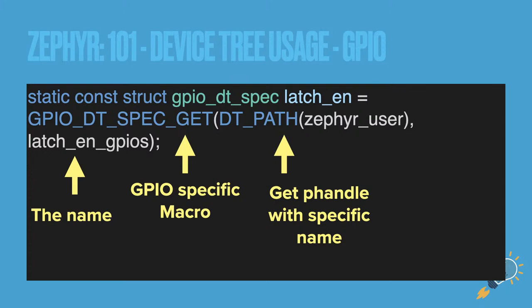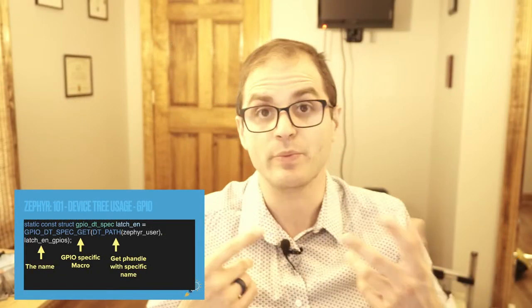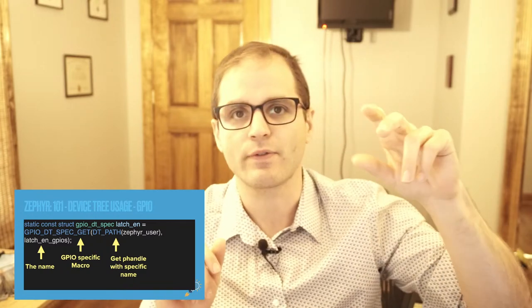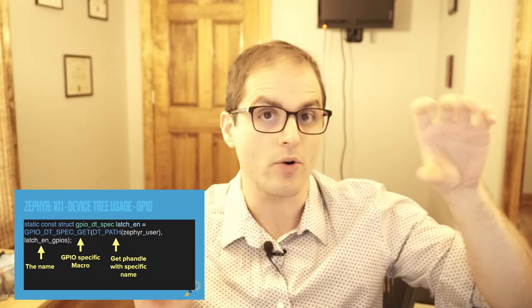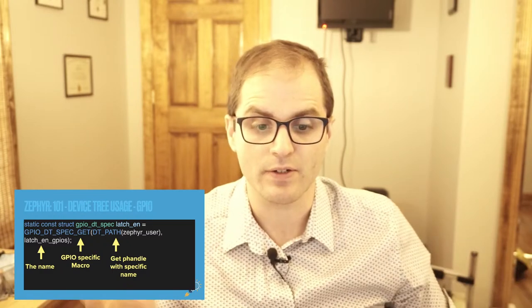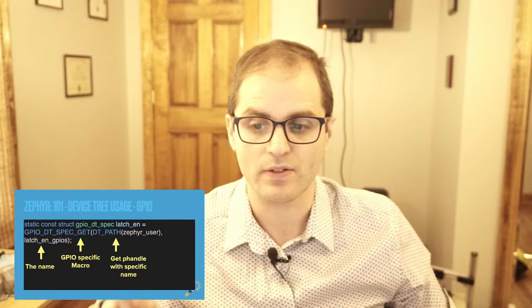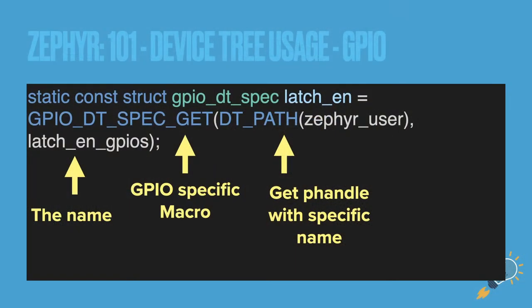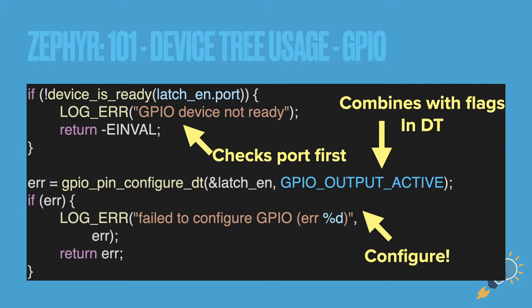We use `GPIO_DT_SPEC_GET` and reference the DT path of `zephyr,user` — that's how you can create your own custom pins and ports within Zephyr without having to create your own device binding, which can get complicated. One note: if you want to define GPIOs, you have to name them a specific way. Zephyr will look for anything with `gpios` with an 's' at the end, and all GPIO definitions are specified as arrays.